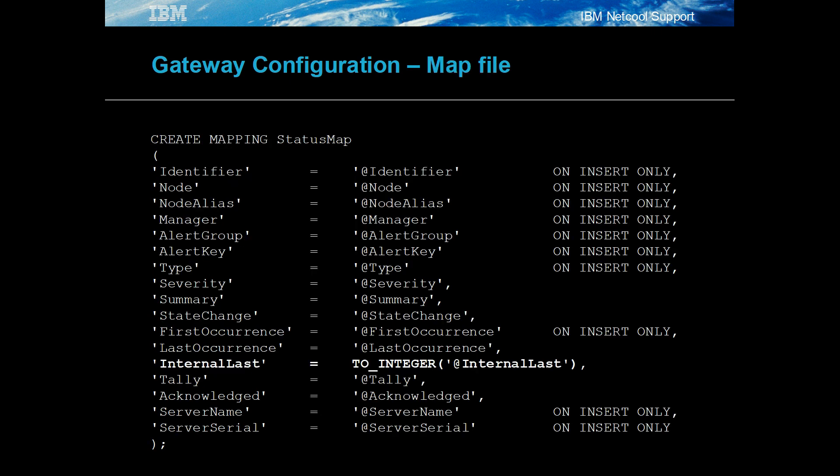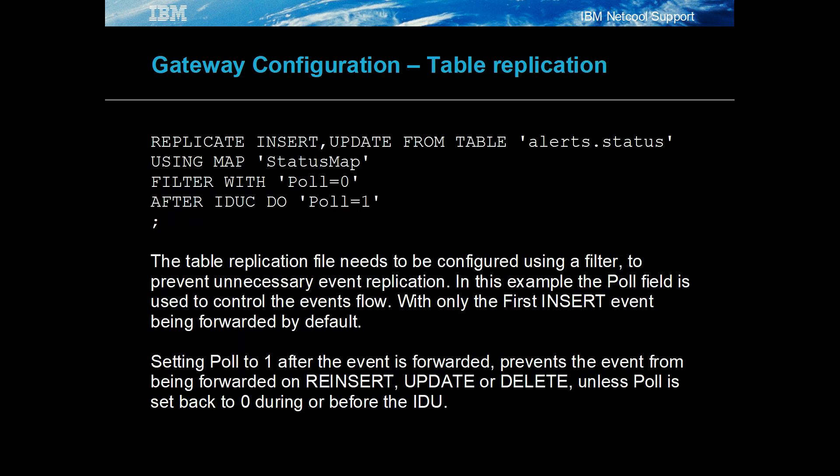The mapping defines which object server fields are forwarded to the probe. In this example, the internal last field is converted to an integer. The event replication to the probe was restricted using the object server field pole to filter events and to acknowledge when an event has been processed. Resetting pole to zero allows the event to be resent by the probe.